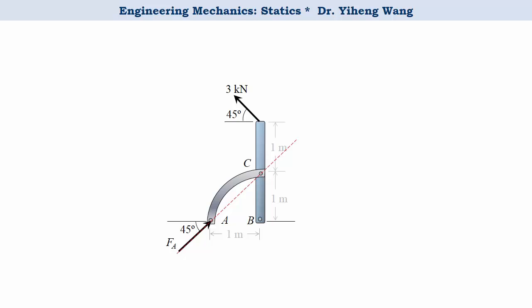Now we can again treat the assembly as one system. Even more, we notice that member BC is also a three-force member, and we know the direction of two forces acting on it already. Therefore the third force must be concurrent with the other two. And therefore we can also determine the direction of the force acting at pin support B.